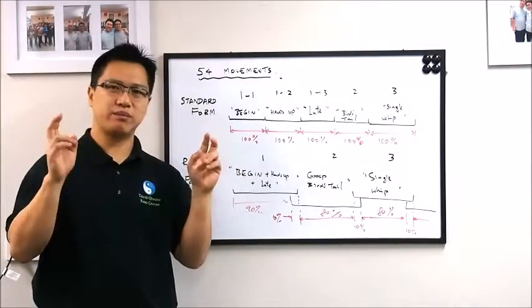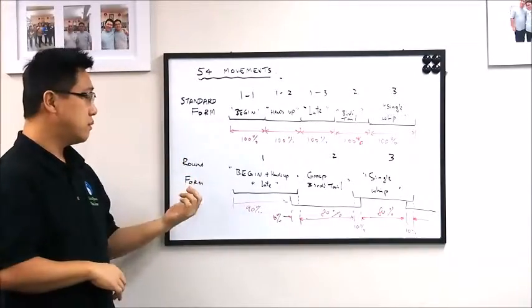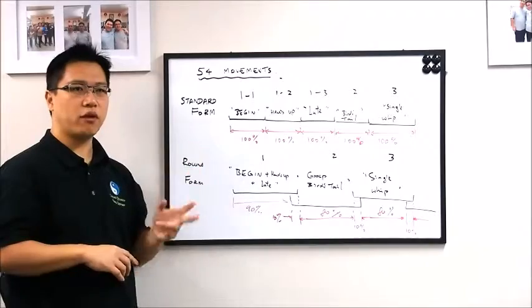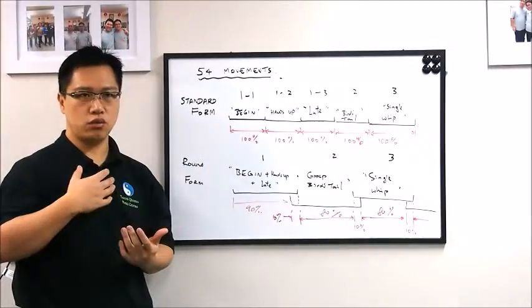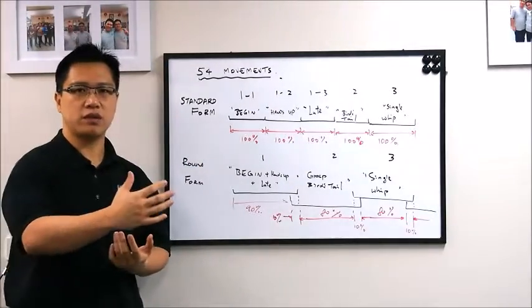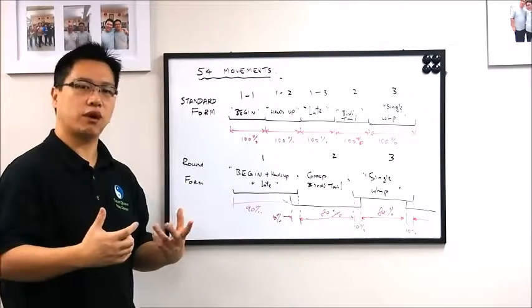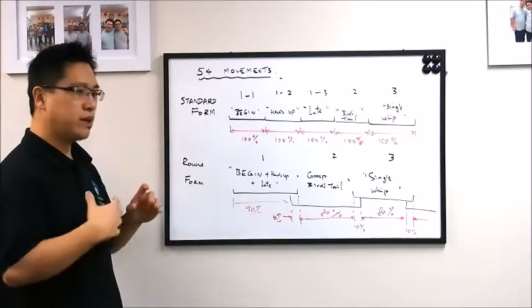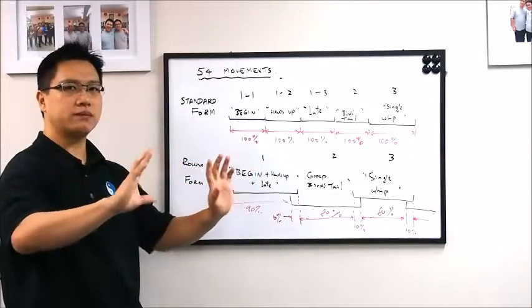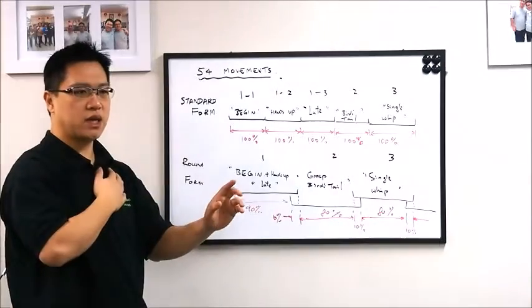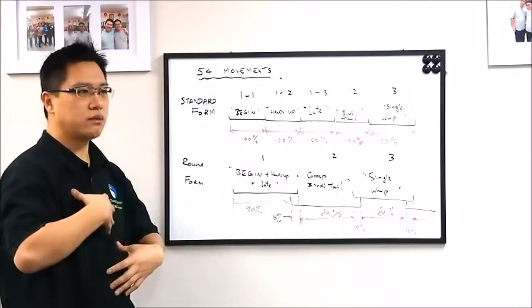So that's why people call it square, which is different from the round, but this is the standard form that we train to push ourselves to the limit of our body. This is lengthwise, not strengthwise. So we are stretching out the maximum of how we can stretch, how we can hold, how we balance.